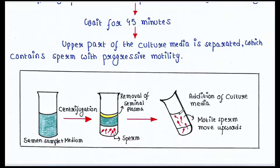The upper part of the culture media is then separated, which contains sperm with progressive motility. This is all about today's lecture — I hope you liked it. Thank you for watching.